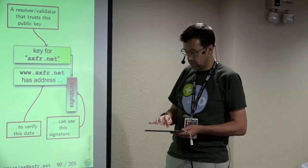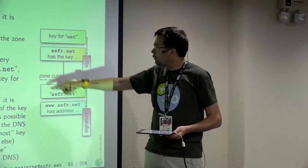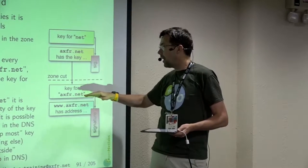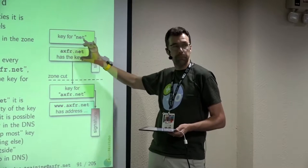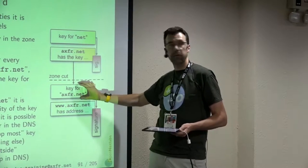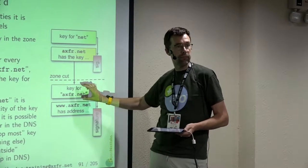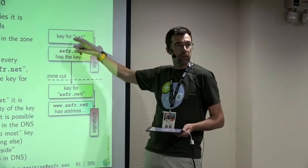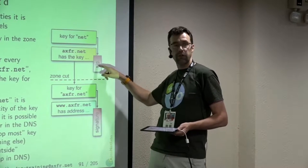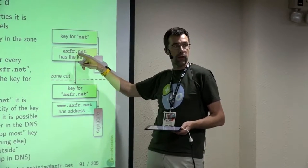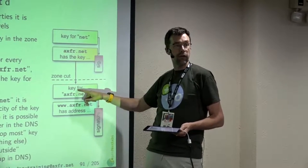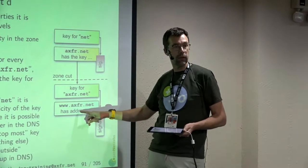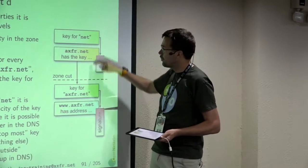The way that works is by, at the delegation point — in this case, we're talking about the delegation point between net and axfr.net — at the delegation point, we have something in the parent that can be used to authenticate the key in the child. And once you have that design, if you trust the key for net, then you can use the signature of this thing to trust that thing. And if that thing authenticates this key, then suddenly you trust this key. And then you can use that key to verify this signature, and you trust this data. So the trick here is how to bridge the zone cut.